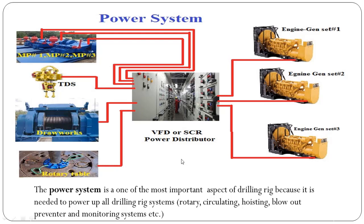It is important to note that a rig can have a VFD drive or SCR drive, and it is also possible that a rig may have a hybrid system — meaning it may have both VFD and SCR together. For example, if mud pumps, draw works, and rotary table have DC motors, then we will use SCR to run these. If the TDS has an AC motor, then we will need VFD to run the TDS with AC current.